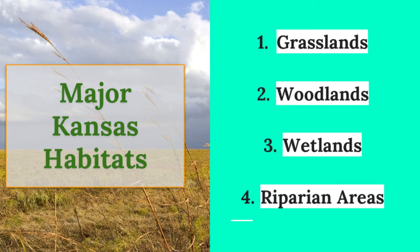So let's take a look at some of the main habitat types in Kansas. We're going to be exploring grasslands, woodlands, wetlands, and riparian areas.